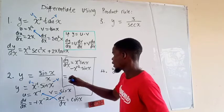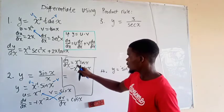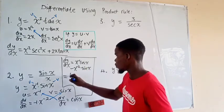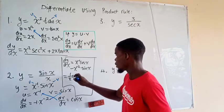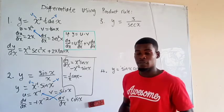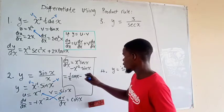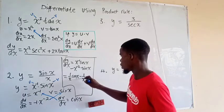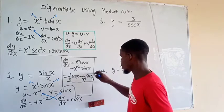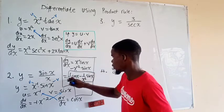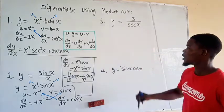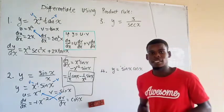We can simplify: x to the negative one becomes one over x, so the first term is cosine x over x. Then x to the negative two becomes one over x squared, so the second term is negative sine x over x squared. This is the derivative of the second function.